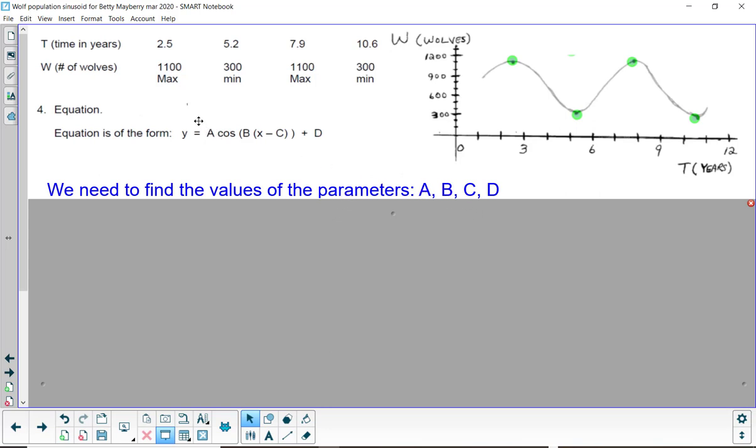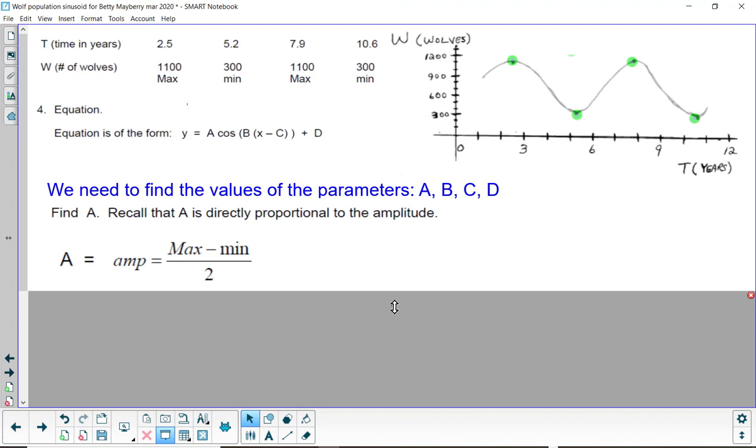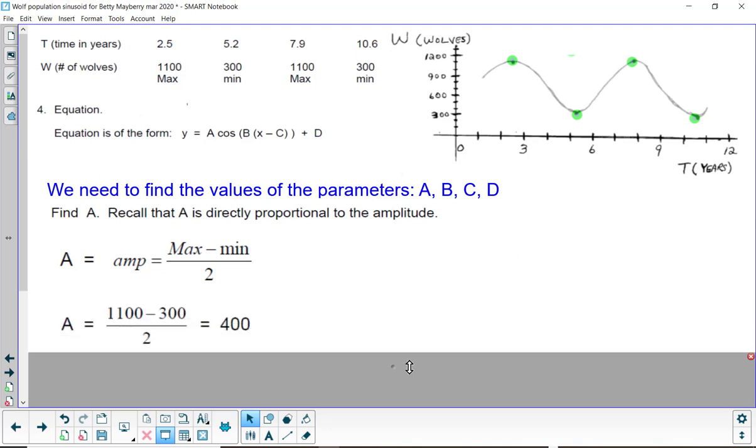We'll go in order A, B, C, D. What do you know about A? Recall that that's directly proportional to the amplitude of the curve. And the way we find A is we take the maximum minus the minimum and divide it by 2. So, the maximum minus the minimum divided by 2 would be 400. So, that's our value for A.